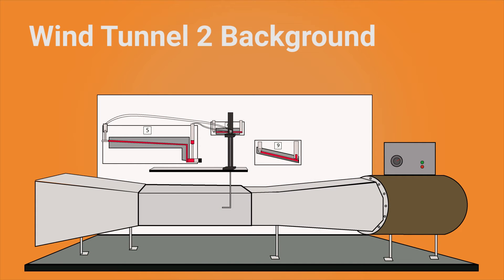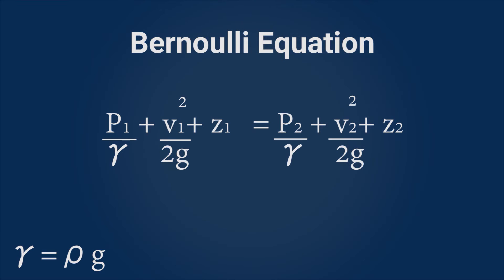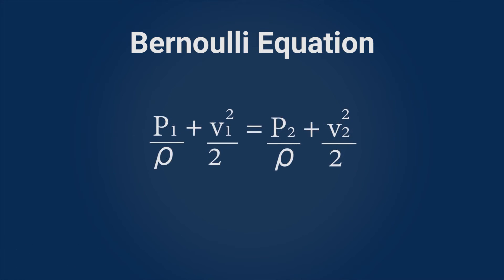Moving to the background for Wind Tunnel 2, we need to cover the Bernoulli equation, which relates the pressure, elevation, and velocity of a fluid along a streamline. For an incompressible fluid, since the inlet and outlet of the wind tunnel are at the exact same height, we can cancel the terms z1 and z2. Since gravity appears on both sides and is not changing, we can cancel that term as well. If we assume the air starts outside the duct at zero velocity — meaning v1 equals zero — and that density remains fairly constant, we can calculate the velocity achieved inside the duct by the changing pressure.